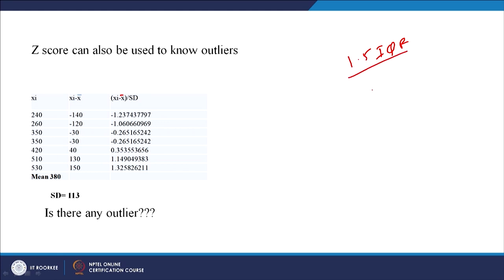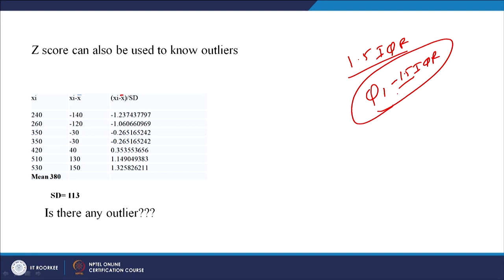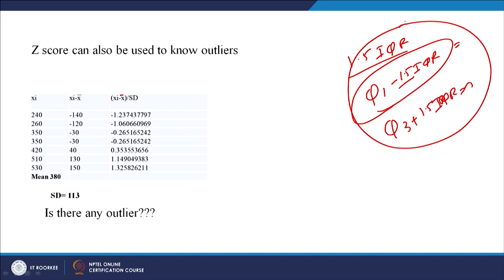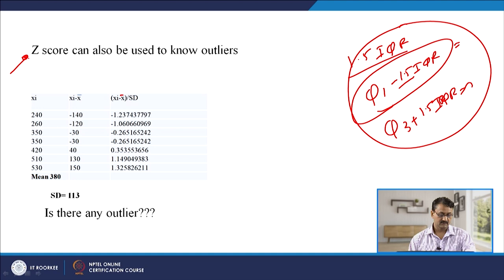We subtracted 1.5 times IQR from Q1, and all those data points which were less than that were outliers. Similarly, Q3 plus 1.5 times IQR — all data points above this would be outliers. But there is a problem with this method: it does not take into account all the data points in a dataset, so many times it does not give you a good set of outliers. A better method — in fact the best method — is the Z score.